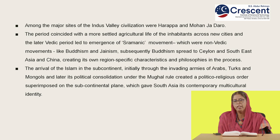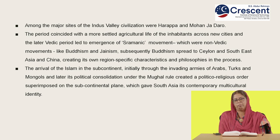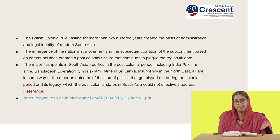Islam arrived in the subcontinent initially through the invading armies of Arabs who came as traders on the Silk Road to sell rare spices. The Turks, Mongols, and later the political consolidation under Mughal rule created a political-religious order superimposed on the subcontinent, giving South Asia its contemporary multicultural identity.